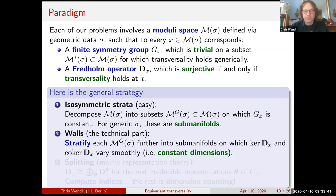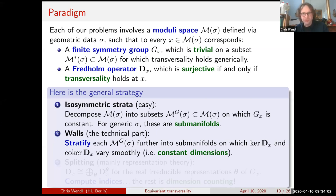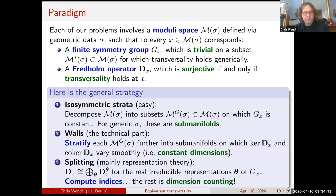The second part — the technical part — is to construct walls inside these strata, further stratifying the isosymmetric strata so that on each substratum the kernel and co-kernel of the Fredholm operators vary smoothly, i.e., their dimensions are constant and form well-defined vector bundles. The third step: understand the natural splitting of these operators due to equivariance. At each point the associated Fredholm operator splits into a direct sum corresponding to the real irreducible representations of the symmetry group. We need to compute the indices of those summands — that's usually the information needed to determine whether equivariant transversality is possible.